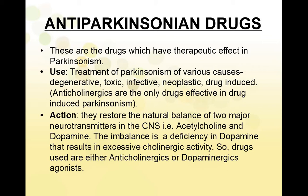Talking about the action of anti-parkinsonian drugs, these drugs help to restore the natural balance between the neurotransmitters in the central nervous system, that is acetylcholine and dopamine. Parkinson's disease is caused because of the decrease in the amount of dopamine due to the destruction of nigrostriatal pathways. So there is a relative imbalance — dopamine decreases and acetylcholine relatively increases, resulting in excessive cholinergic activity. So these drugs are used as either anticholinergics or dopaminergic agonists.